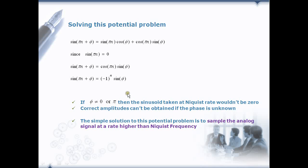Though the samples are not 0 we cannot get the correct amplitudes when the phase phi is unknown. A simple solution to this potential problem is to sample the signal at a rate higher than Nyquist rate.